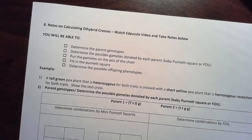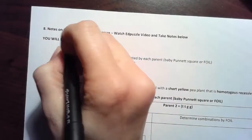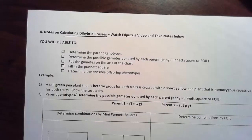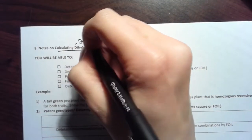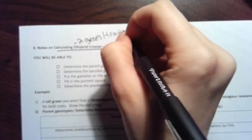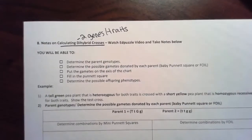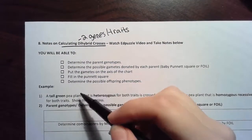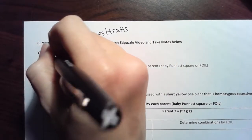Hey guys, in this video we're going to be talking about how to calculate a dihybrid cross. Dihybrid means that we are dealing with two genes or traits instead of one like a monohybrid cross. By the end of this video you should be able to do all of these things, which are also the steps of calculating a dihybrid cross.